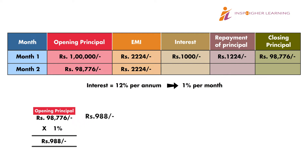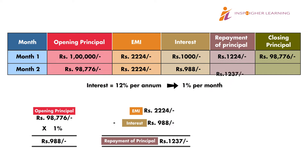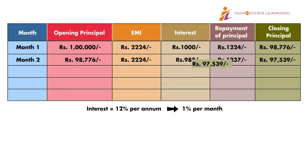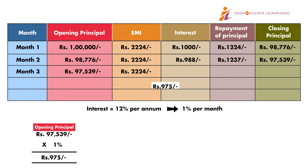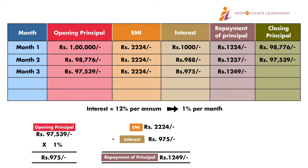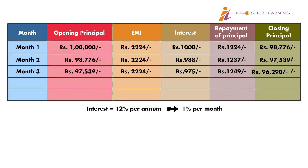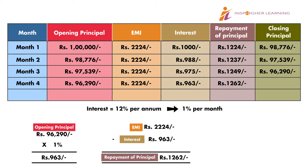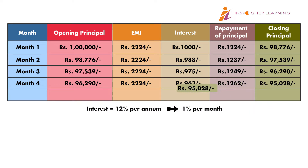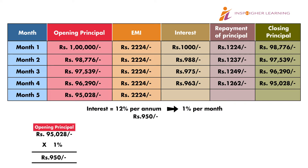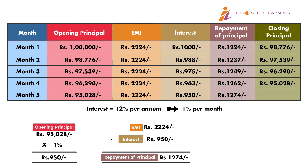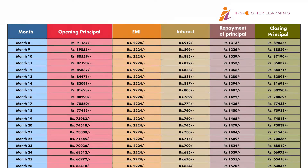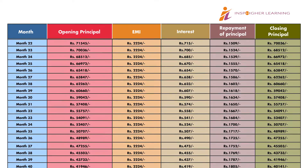When a portion of principal is repaid, it brings down the borrower's loan obligation to that extent. In the second month, interest will be applied on the remaining loan balance, and the process continues in subsequent months. By the end of the loan tenor, a borrower's loan obligation would be completely paid off.